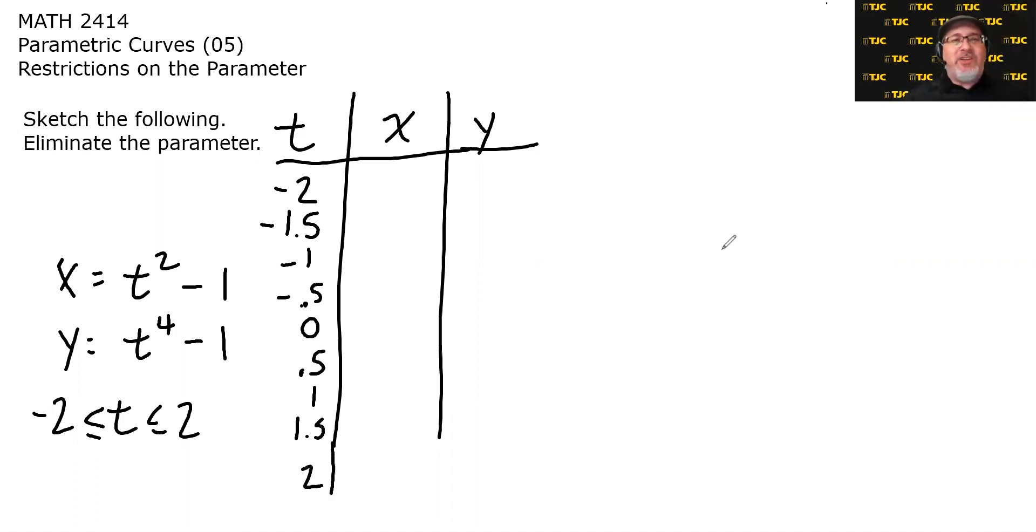Now if you notice, both functions of t are even functions, meaning that it doesn't matter if t is positive or negative. It'll come out the same value. So we really only have to plug in either the positive or negative t's, and then the other ones will be the same.